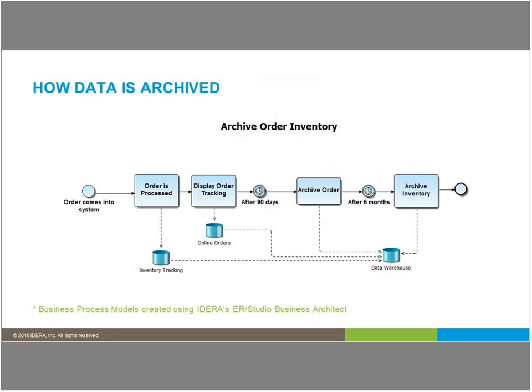This is an example of a data archiving process. You might have three different data stores: inventory tracking, online orders, and a data warehouse. After a certain amount of time, information gets placed in other places. After 90 days, orders and inventory may move — inventory goes to the data warehouse, but the order gets archived. After six months, you archive the inventory. Being able to have these conversations about how much time before data transfers from one place to another is really important.